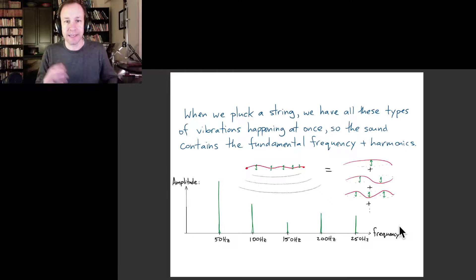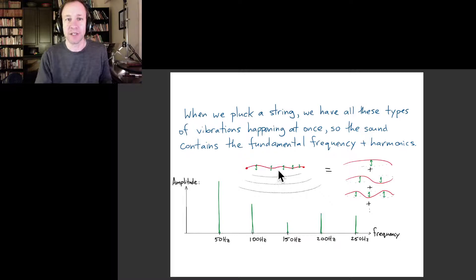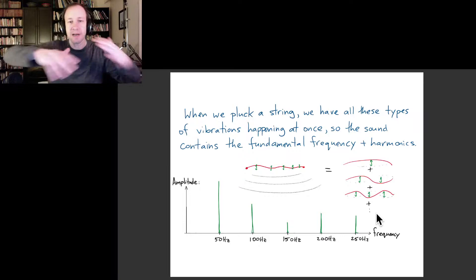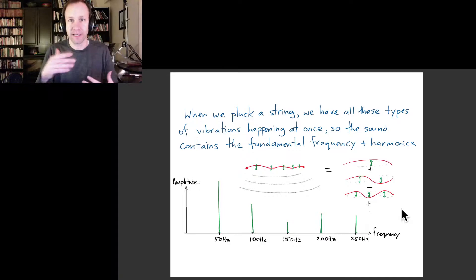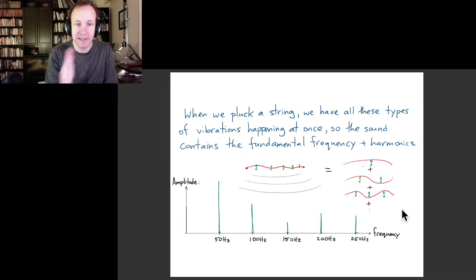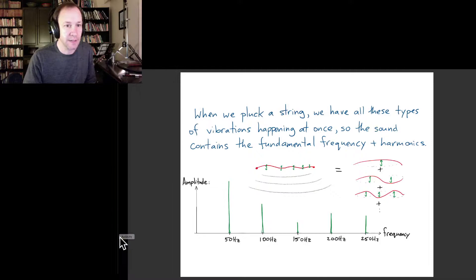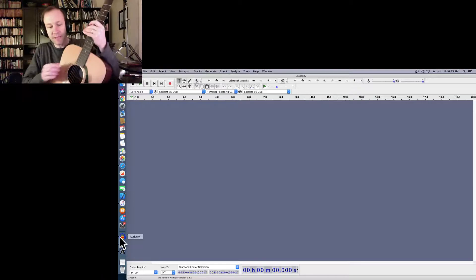I wanted to do a couple of demos today. The first one I want to show you is that in practice when I pluck a guitar string you actually do get a combination of all these frequencies. Generally when you pluck the string it's some kind of complicated motion, but you can understand that by the principle of superposition as these basic kinds of vibrations just happening on top of one another. The way we can see this is to record the sound of a plucked guitar string and look at the frequency spectrum.